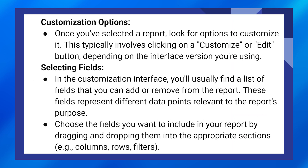Once you've selected a report, look for options to customize it. This typically involves clicking on the customize or edit button, depending on the interface version you're using. In the customization interface, you will usually find a list of fields that you can add or remove from the report. These fields represent different data points relevant to the report's purpose.